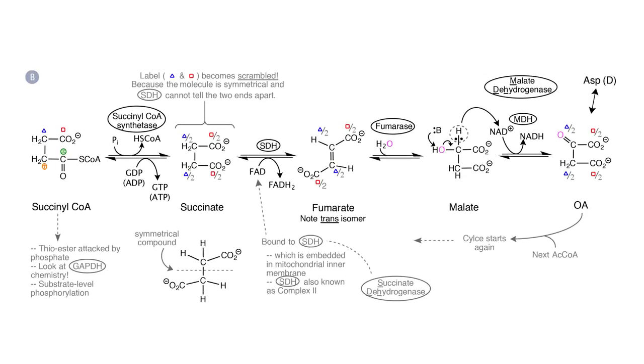Now let's turn to panel B, where we start with succinyl-CoA. Looking at the molecule, note that I've labeled each atom with a symbol. The triangle and square were from the original acetyl-CoA molecule. The enzyme that processes succinyl-CoA is succinyl-CoA synthetase. Synthetases typically need a nucleotide. In this case, the nucleotide is GDP in mammalian systems or ADP in bacterial systems. They're phosphorylated to form GTP or ATP, respectively.